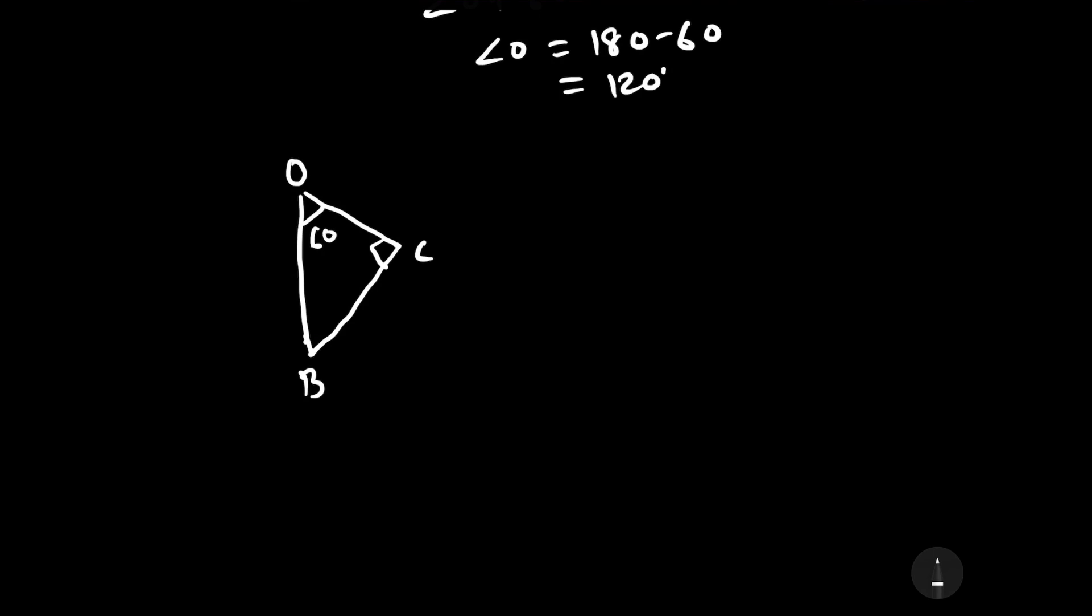From this triangle, we can find the length of OB by trigonometry. The length of OC is R. Let us find it by trigonometry. This is the base, this one is the perpendicular and this one is the hypotenuse. We know that cos theta is equal to base upon hypotenuse.